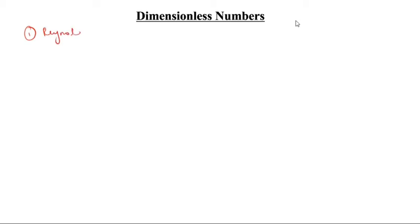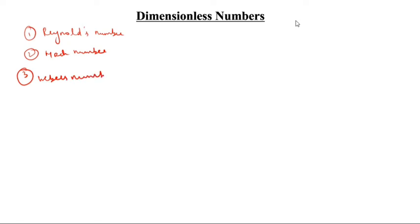Today, we are going to learn dimensionless numbers. What are the dimensionless numbers? First one, Reynolds number. Second one, Mach number. Third one, Weber's number. Fourth one, Euler's number. Fifth one, Froude's number.